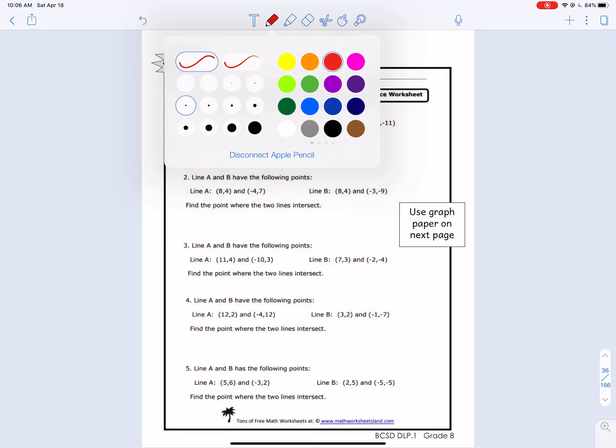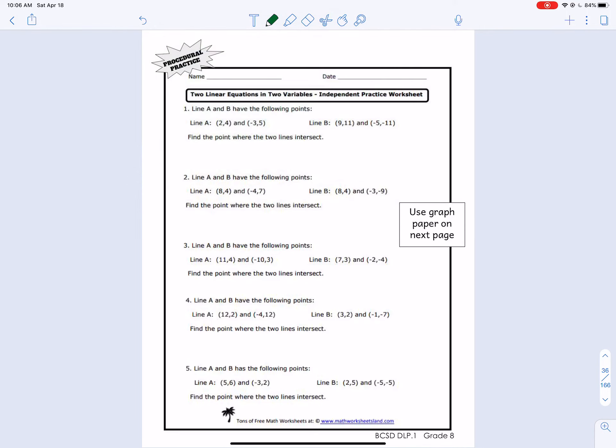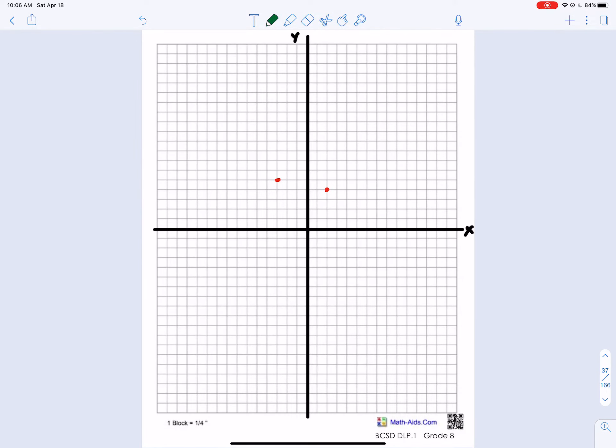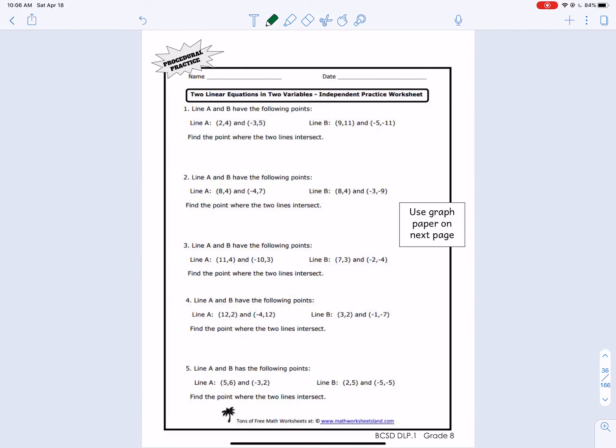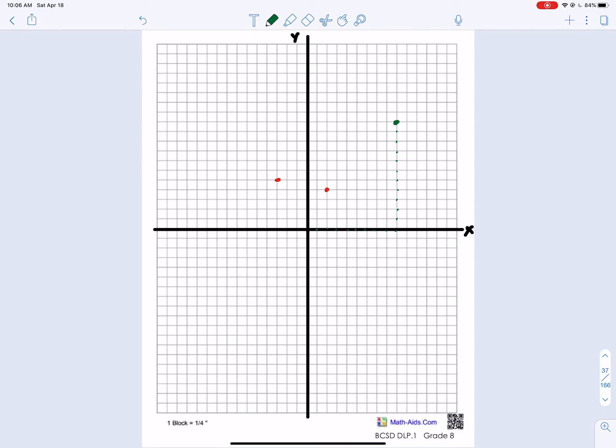Line B, let's do in green. And it's 9, 11. So 9, 1, 2, 3, 4, 5, 6, 7, 8, 9, 11. 1, 2, 3, 4, 5, 6, 7, 8, 9, 10, 11. And then negative 5, negative 11. Negative 5, 1, 2, 3, 4, 5. Negative 11, 1, 2, 3, 4, 5, 6, 7, 8, 9, 10, 11.